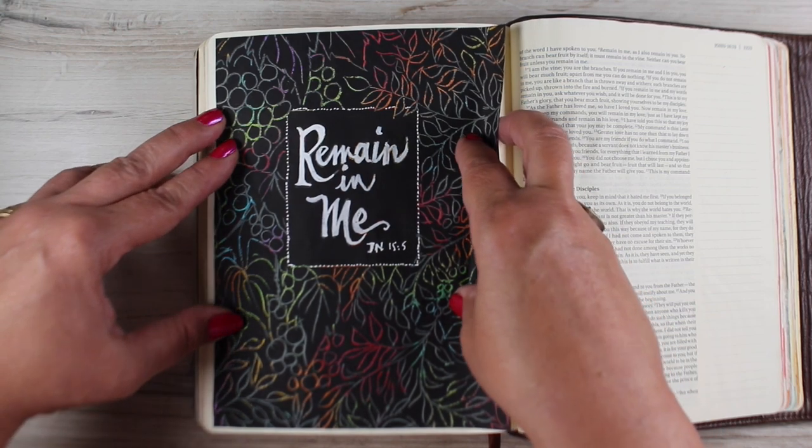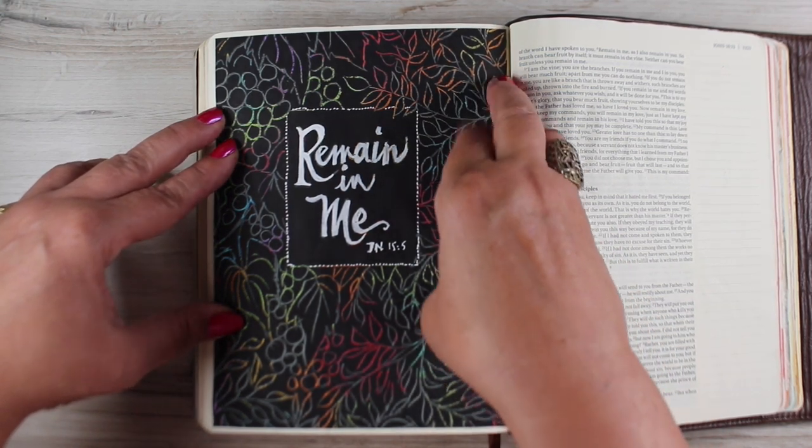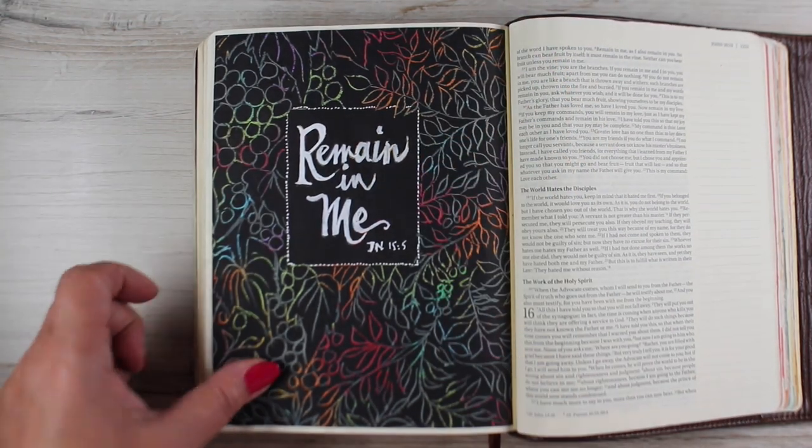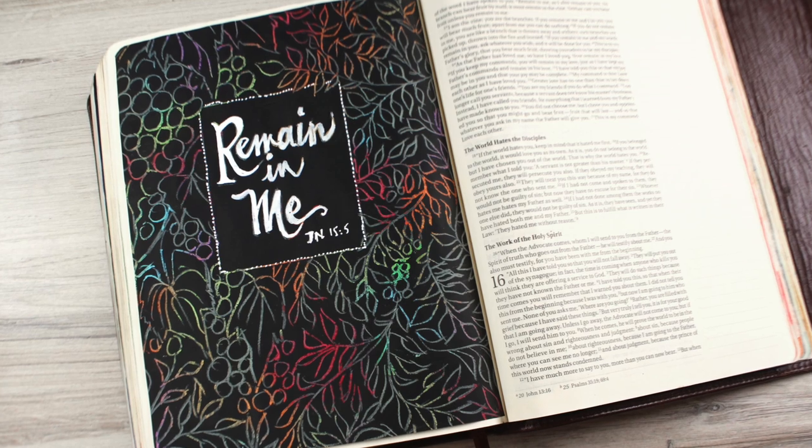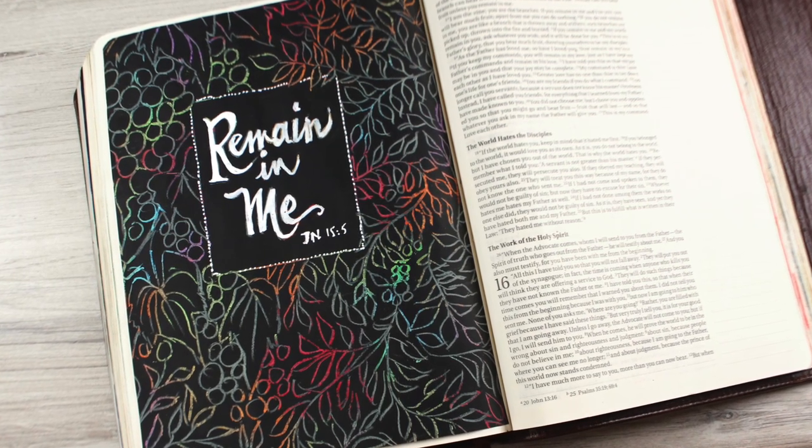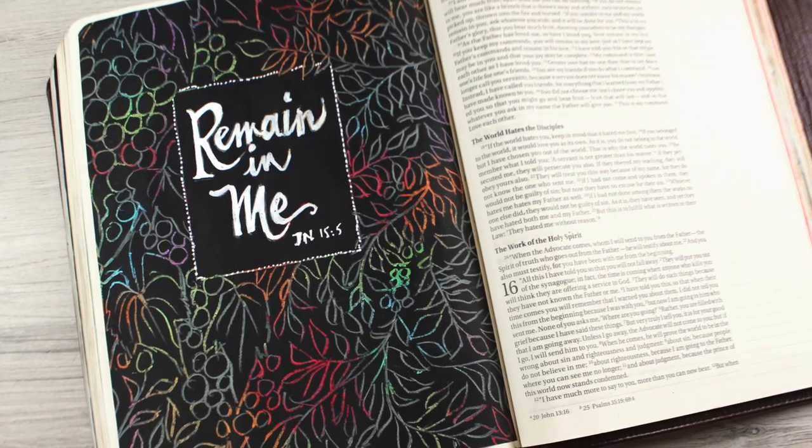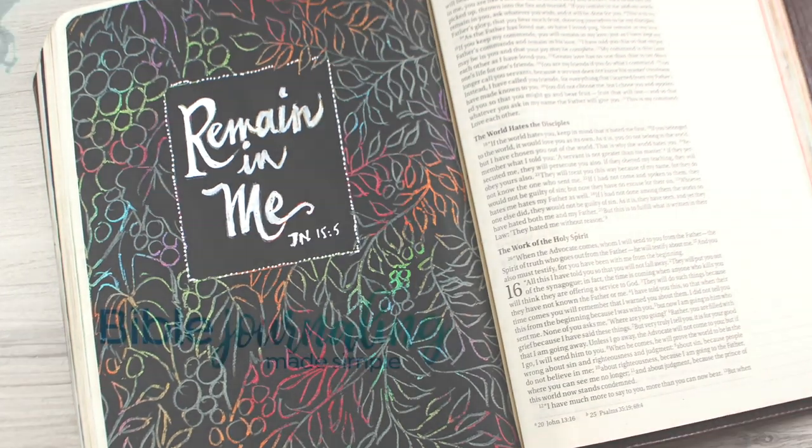Then I used some double stick tape to adhere this on. I did trim it down smaller than the outside edges of my Bible. Usually I make it a full page size, but since I accidentally cut it too small, I just cut it too small evenly all around so it made it look like I was trying to make it smaller and framed in.